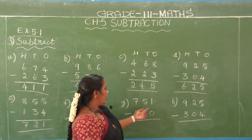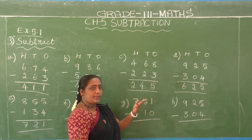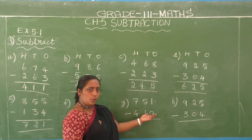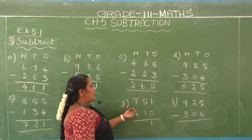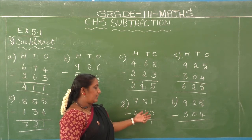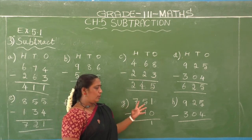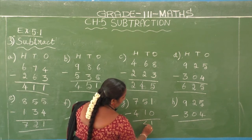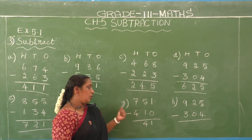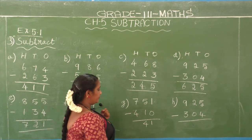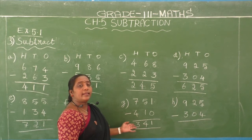G1: 751 minus 410. Ones place — second number is 0, first number is 1: 0 means nothing, so 1 minus 0 equals 1 automatically. Tens place — second number 1, first number 5: 1 after 2, 3, 4, 5. Difference is 4. Hundreds place — second number 4, first number 7: 4 after 5, 6, 7. Difference is 3. So 751 minus 410 equals 341.